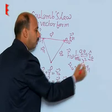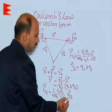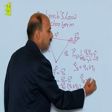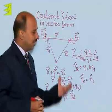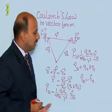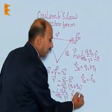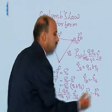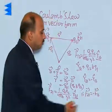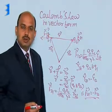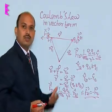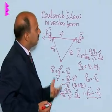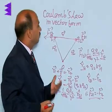Now see here, there is R12 and there is R21, but we know that R21 is equal to minus R12 — magnitude is equal but directions are opposite to each other. Therefore, we can write F21 is equal to minus F12, so these two forces are equal and opposite to each other. It means Newton's third law is valid here. So this is the vector form of Coulomb's law.